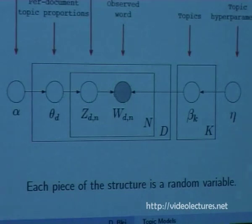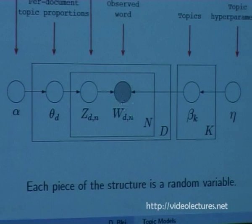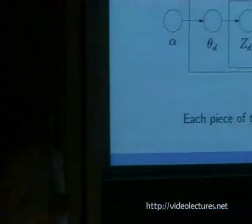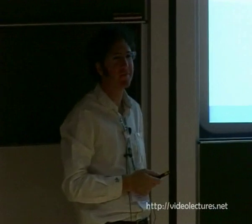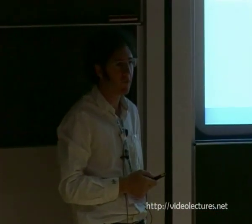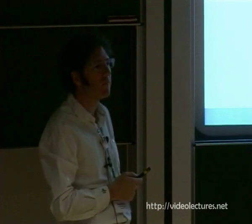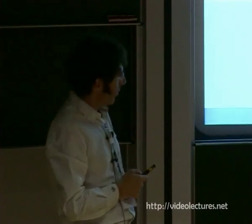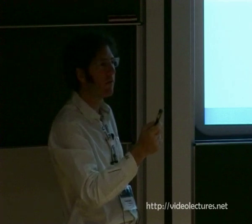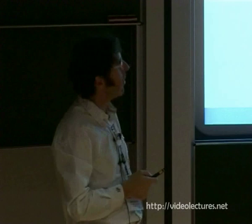W_dn is the nth word in the dth document, and it is the only observed random variable in the whole model — all we observe are a bunch of words organized by document. W_dn depends on Z_dn and all the betas. Why? Because the word is selected from the topic — Z_dn tells us which topic, and all topics contain this word. Since all words are contained in all topics, the probability of a word given Z and beta is: beta_{Z_dn, W_dn} — we index into the Z_dn-th topic and look up the probability of word W_dn.